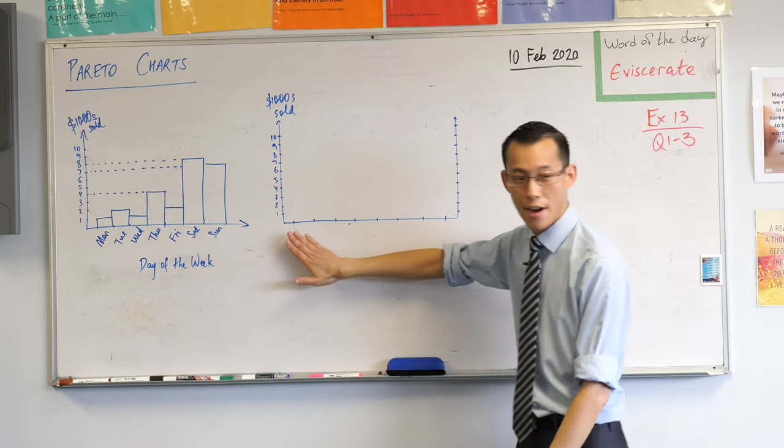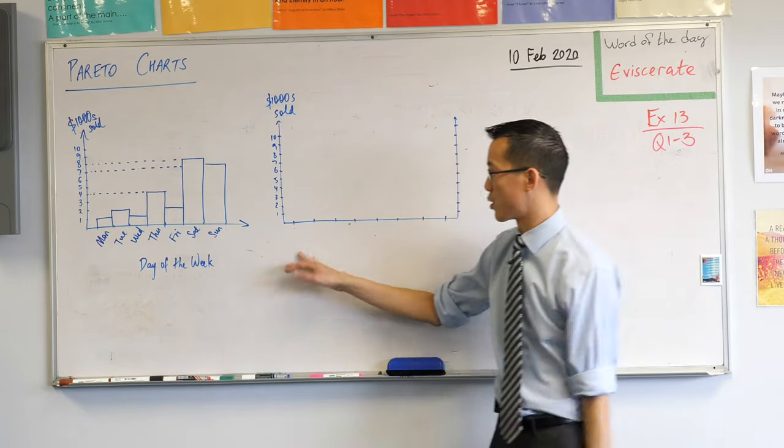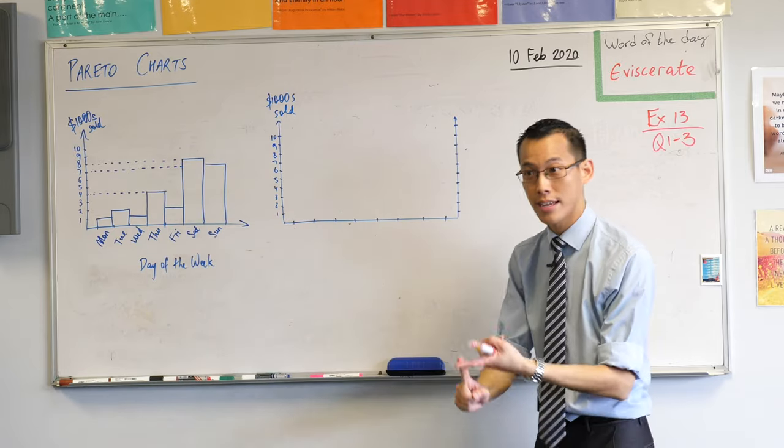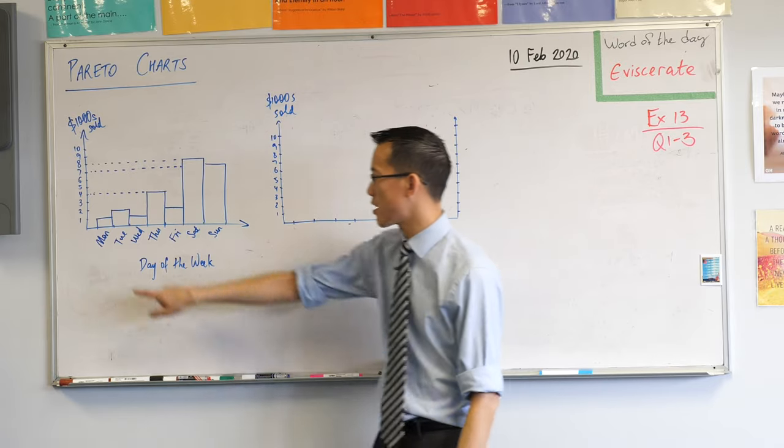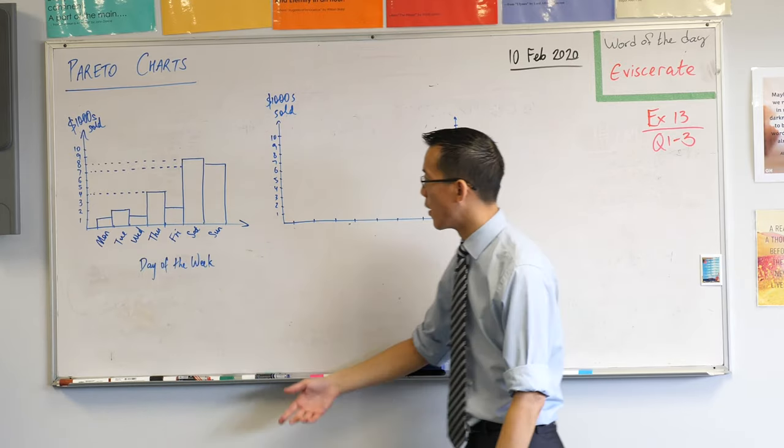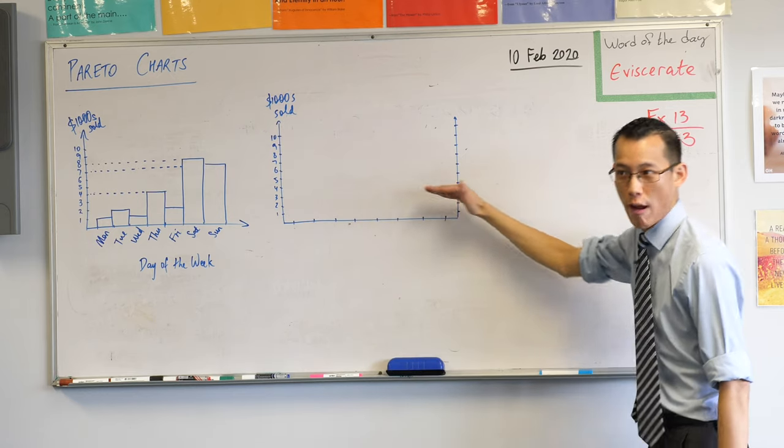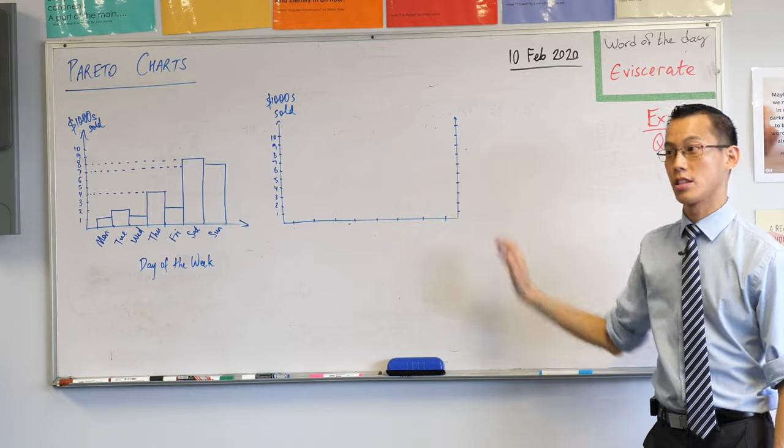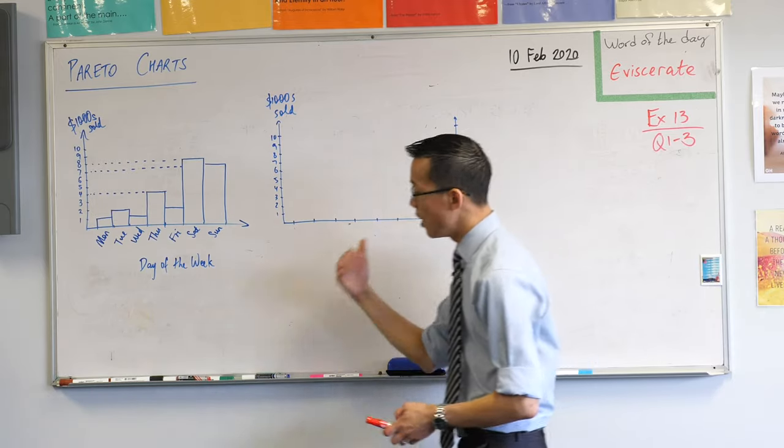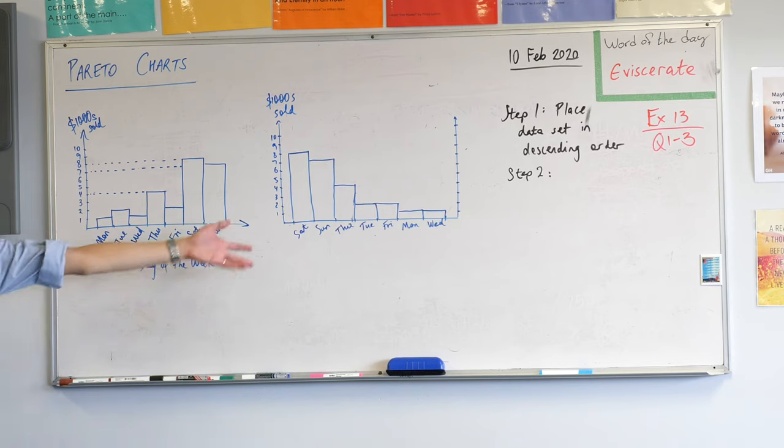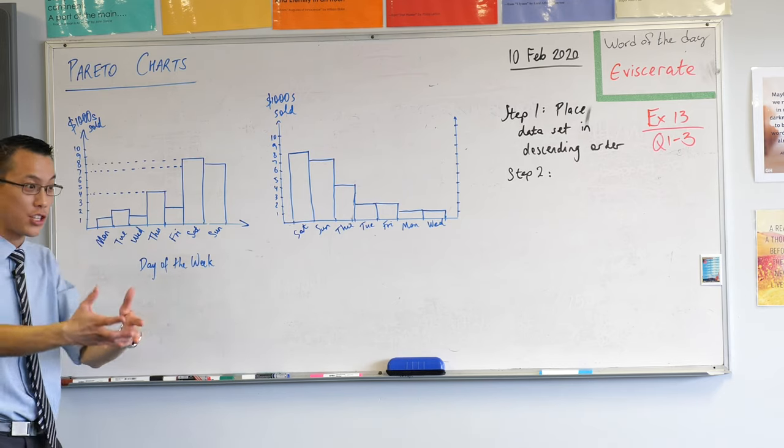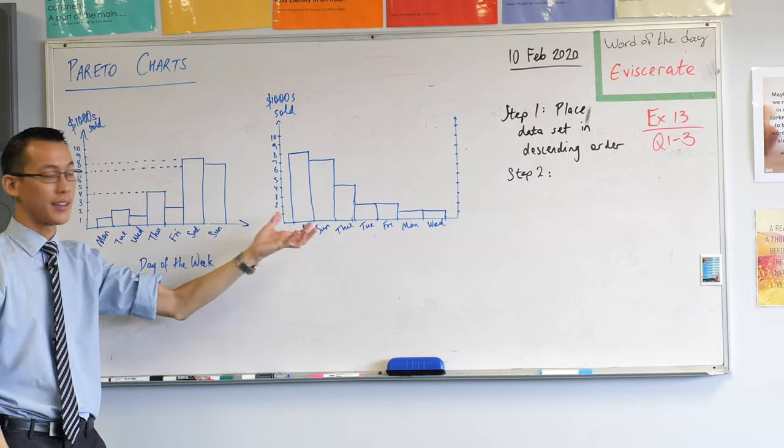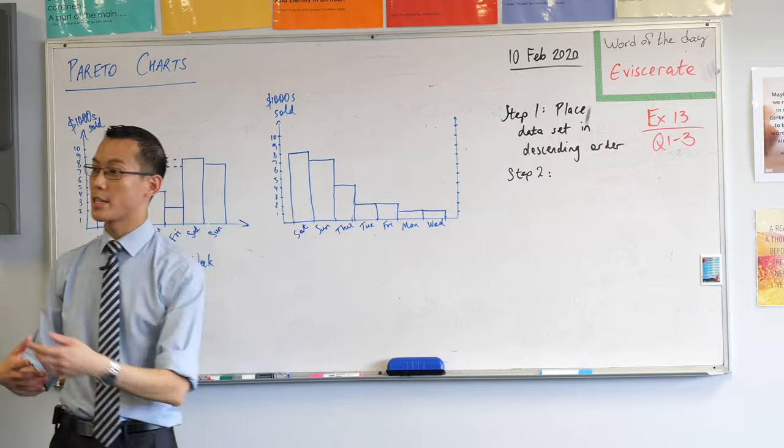We're going to start from the left with the highest data point, so in this case it'd be Saturday which is up there at eight, then we're going to do the next data point. So we're going to do it completely out of order. There will be some that are the same and that's fine, but we're looking for a cascading graph here that shows which are the biggest days all the way down to the smallest days. Can I give you a minute to go ahead and put those onto the chart? Let me explain now that we've done step one, placing this same data set in descending order.